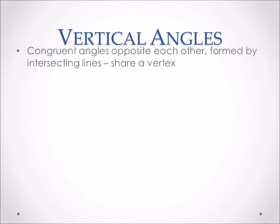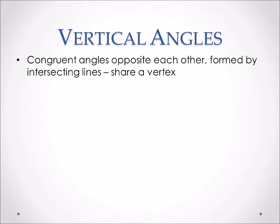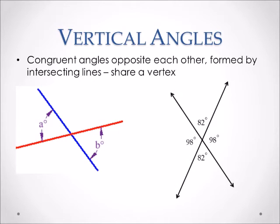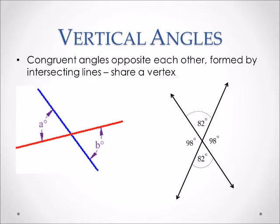Moving on to vertical angles. Vertical angles are congruent angles, opposite of each other, formed by intersecting lines, and they share a vertex. Here is an example of two intersecting lines where A and B are vertical angles and they are also congruent. With numbers: 82 degrees forms two vertical angles because they are congruent, opposite of each other, and share a vertex. Likewise, 98 degrees also forms a pair of vertical angles, and 98 is not congruent to 82 degrees.